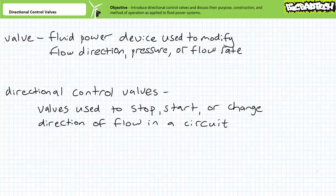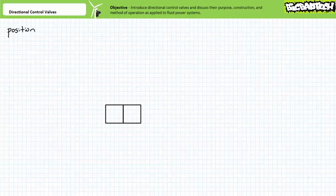Directional control valves are best introduced using a progressive examination of the schematic symbols that make them up. We'll start out slow and increase the speed and intensity as we go along. Valves are ordinarily drawn schematically as boxes, where each box is an independent position the valve can assume. Each valve position performs a particular function. Since this schematic symbol has two boxes, this valve is a two-position valve.